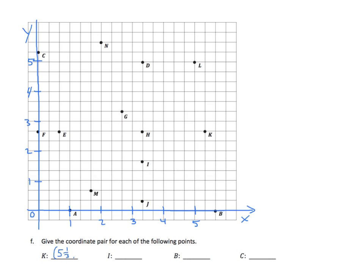Now I need to find the value for y. Going back to K, I'm going to draw a horizontal line to the y-axis and I see 2 and 2-thirds. So my y-coordinate is 2 and 2-thirds. Let's do the same for I. Drawing a vertical line down to my x-axis, I see 3 and 1-third. Drawing a horizontal line from I to the y-axis, I see 1 and 2-thirds.